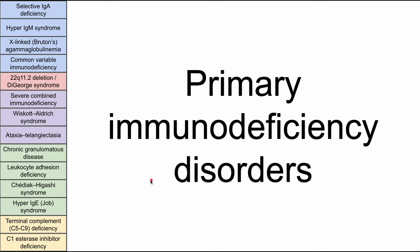Primary immunodeficiency disorders. You'll see that a lot of these disorders run along the same themes. A lot of them have recurrent sinopulmonary infections. A lot of them are treated with IVIG, or some of them require bone marrow transplant. So it's important to be able to differentiate between them. Some of them have some pretty standout features, and sometimes those features are in the name, but otherwise this video will help you differentiate between the primary immunodeficiency disorders.